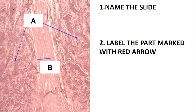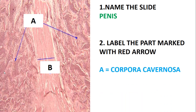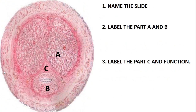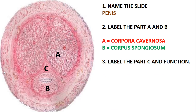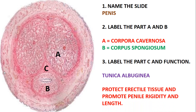Name this slide — this is the penis. Label the parts marked with letters: A is the corpora cavernosa and B is the tunica albuginea. Moving to the next slide, which is also the penis: A is the corpora cavernosa, B is the corpus spongiosum. Label part C and its function: C is the tunica albuginea, and its function is to protect the erectile tissue and promote penile rigidity and length.